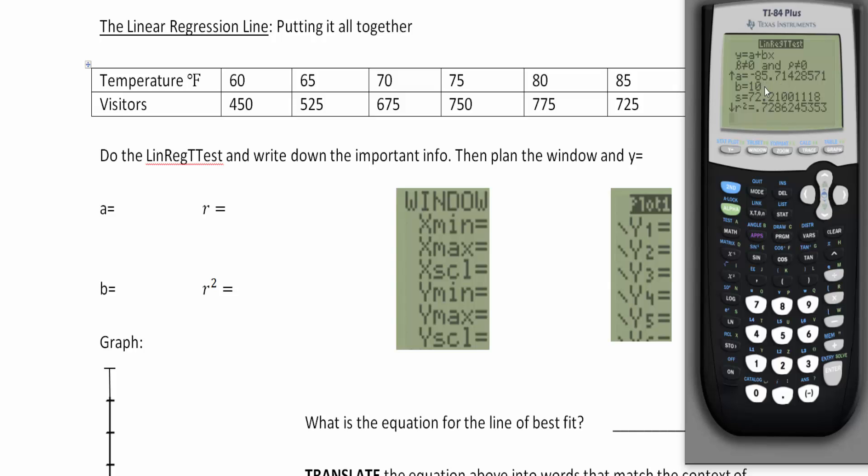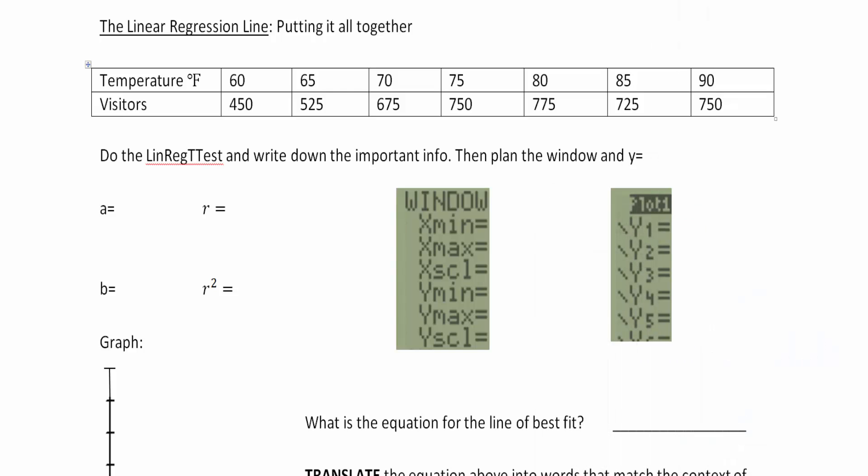My b value is, by some beautiful work on my part, a whole number. We don't see a lot of whole numbers for these problems, so enjoy it while you have it. Then my r and r squared is 0.85 and 0.73. I'm going to round pretty aggressively here.